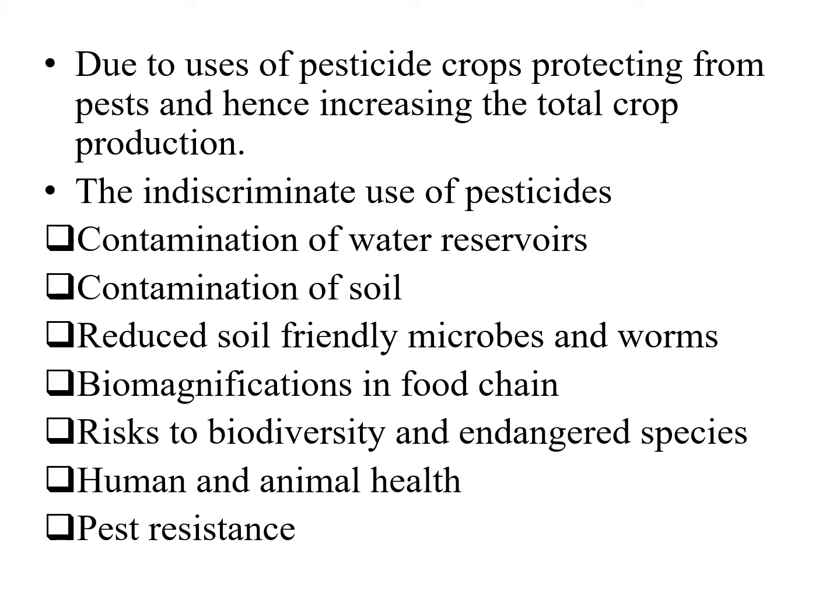We know about the use of biopesticides — they increase the total crop productivity by protecting crops from pests. The indiscriminate use of pesticides increases the following problems: contamination of water reservoirs, contamination of soil, reduced soil-friendly microbes and worms, biomagnification in the food chain, risk to biodiversity and endangered species, and effects on human and animal health, with some pests developing resistance.